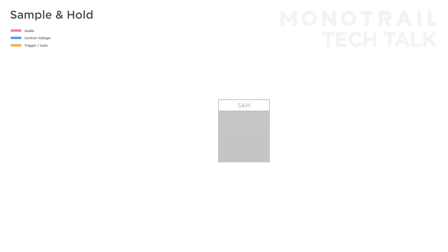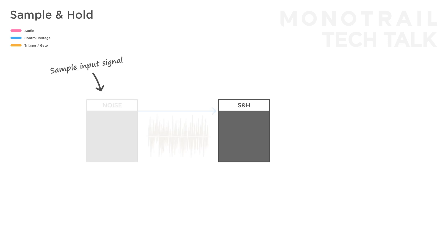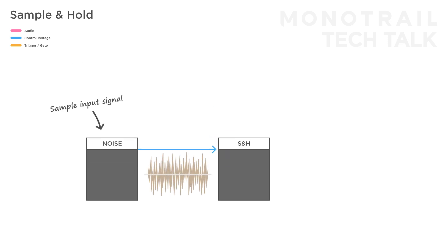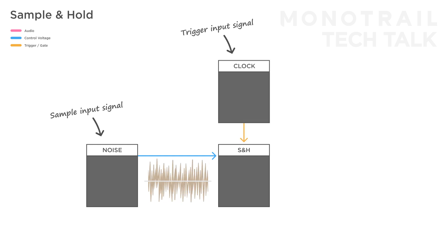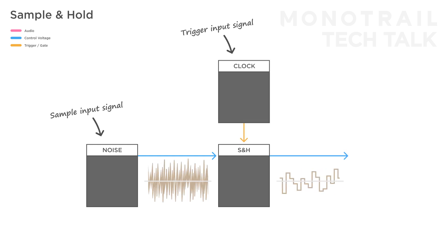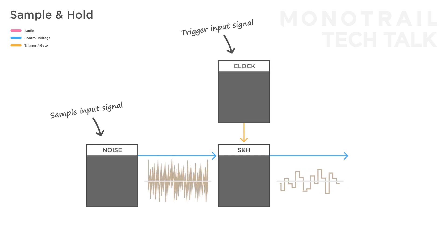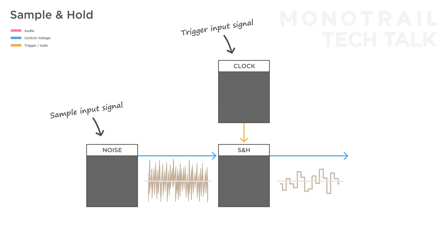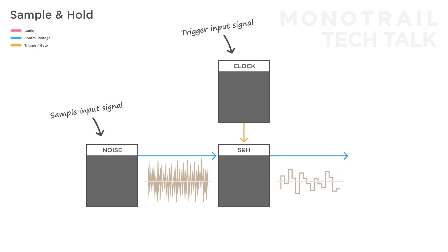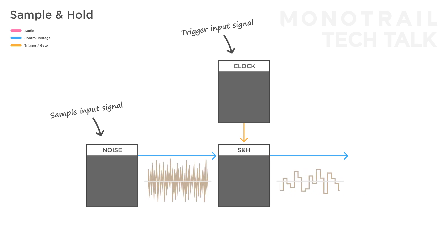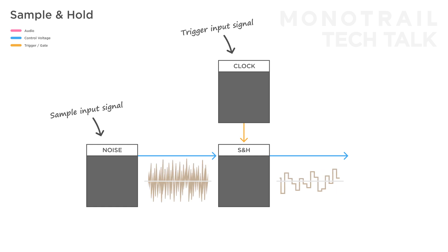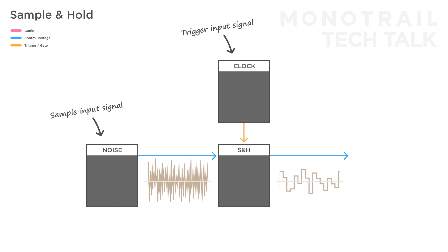As we've seen in the last video, a sample and hold function requires two signals to function: an input signal to sample, like an LFO or noise, and a trigger or gate signal. Every time a sample and hold module receives a trigger it will check the current value of the sample signal and hold that value at the output until it receives a new trigger. A classic thing to do is feed a sample and hold noise and a steady clock to create this classic stepped random signal.